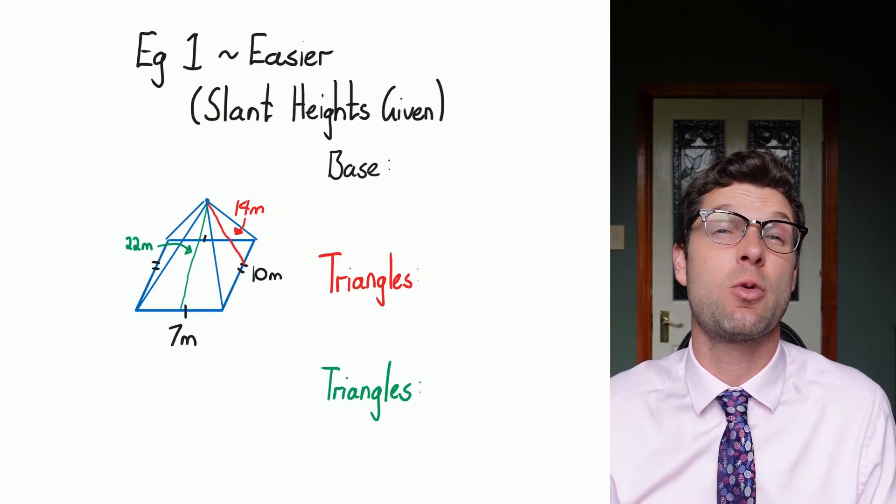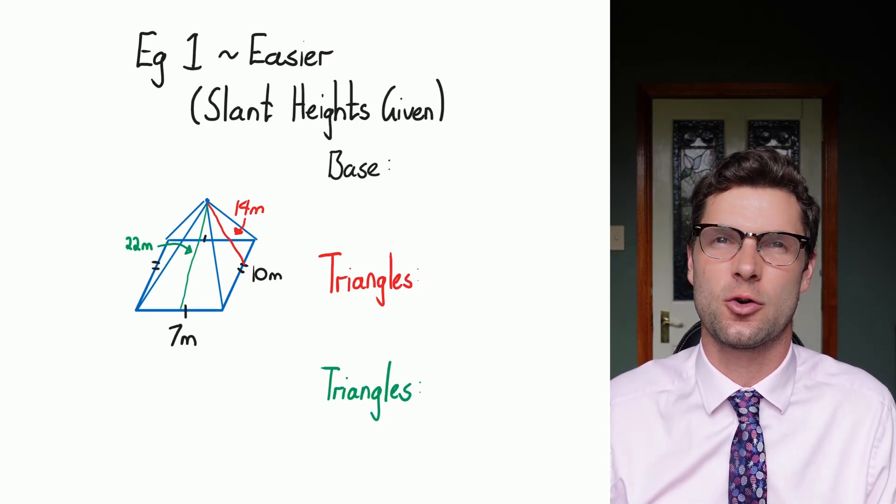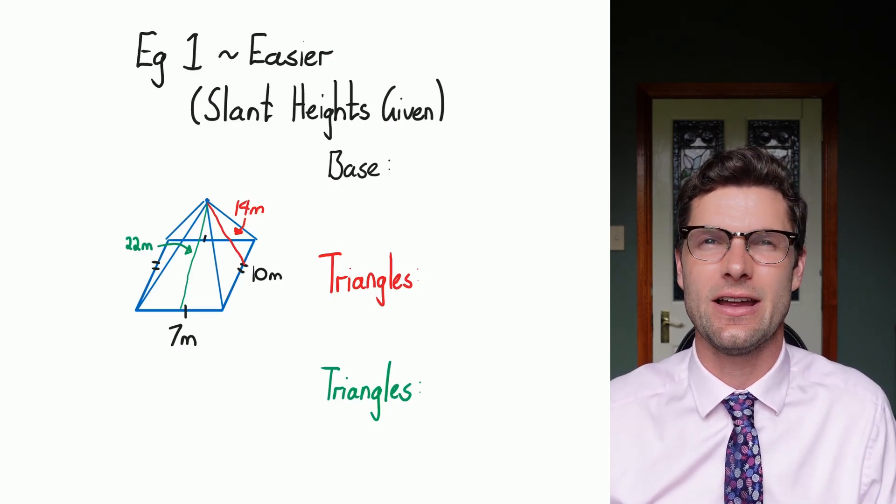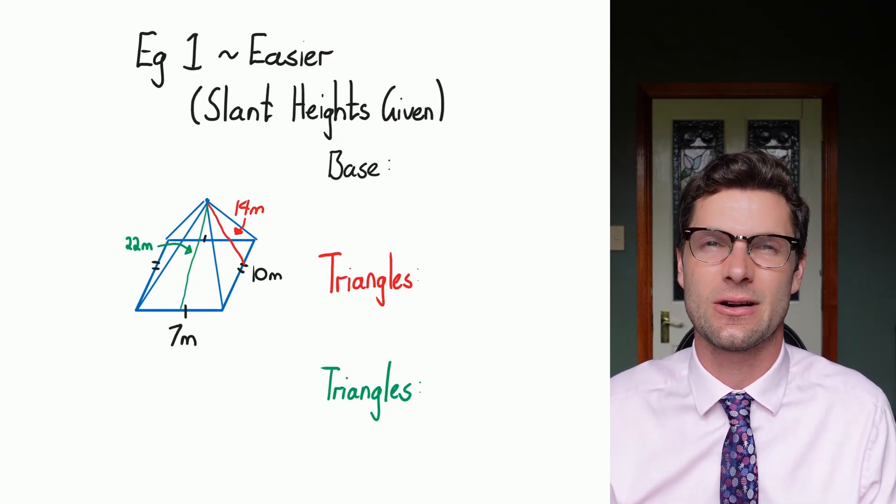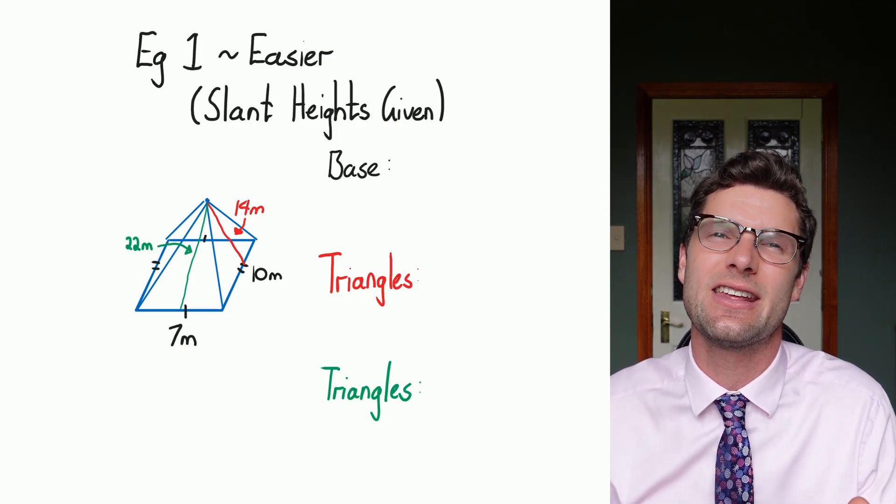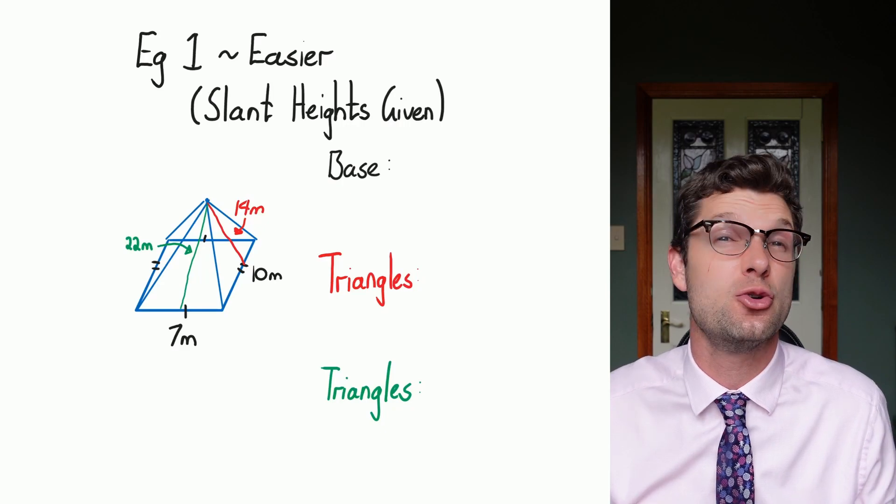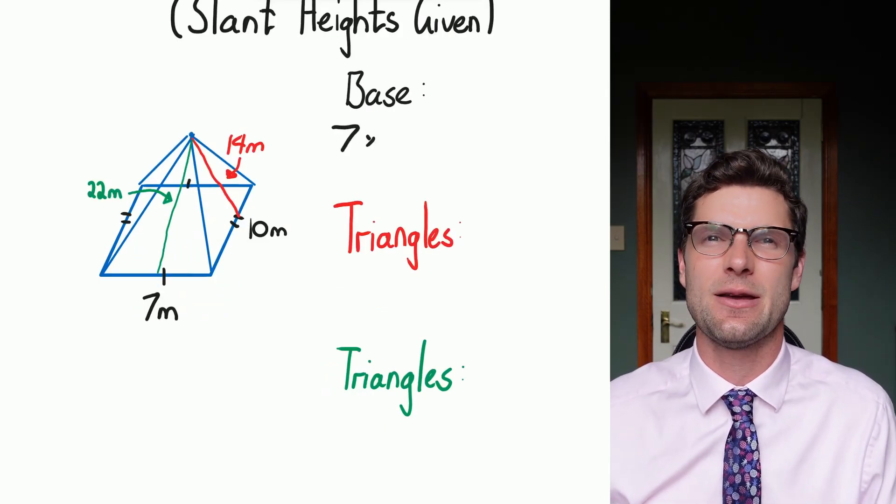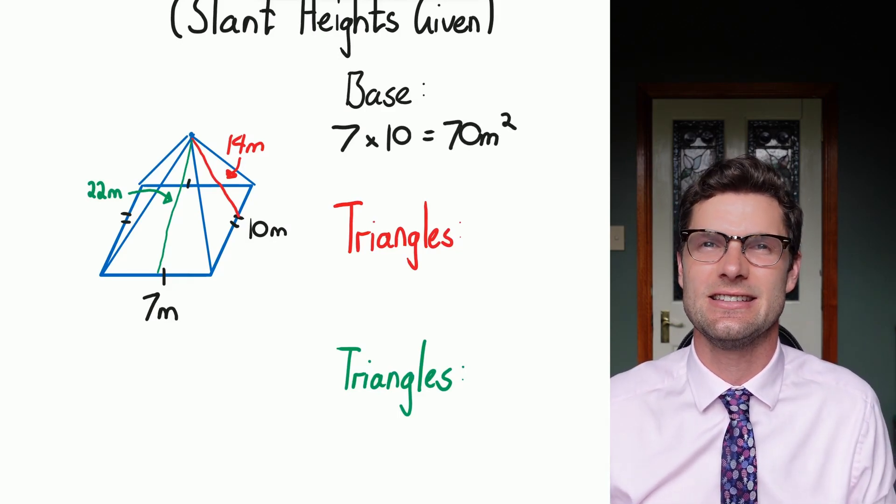So the first example we've got here is where the slant height is given. These are the easier types of questions because we've been given the height of the triangle that we need to find. These ones are pretty cruisy. I do like to use different types of pens or different colors just to make sure I've got everything down. You obviously don't have to, but it is something that just scaffolds everything in my mind that I would recommend you do if you are struggling. So obviously I've got the base of the rectangle as my first shape. I just have to multiply 7 and 10, which will give me 70. Happy days, that's nice and easy.